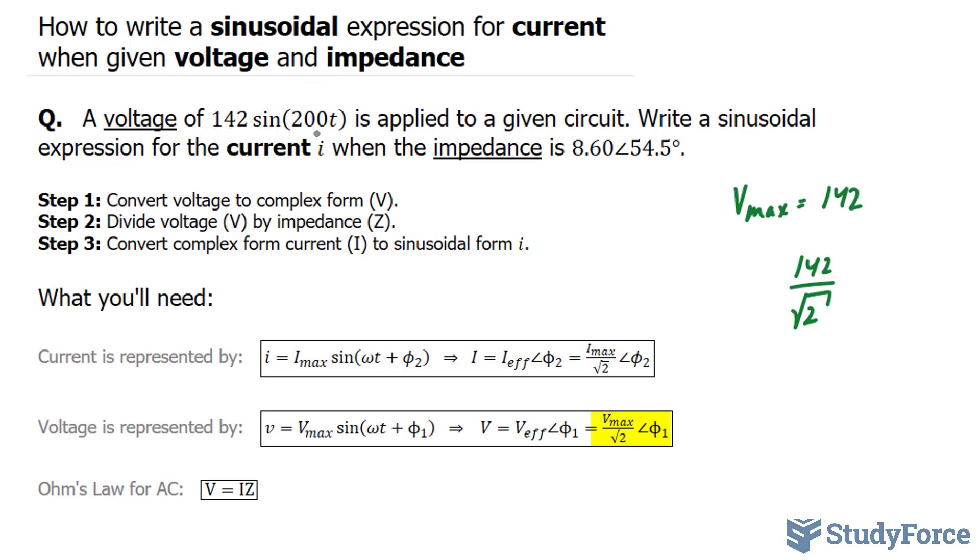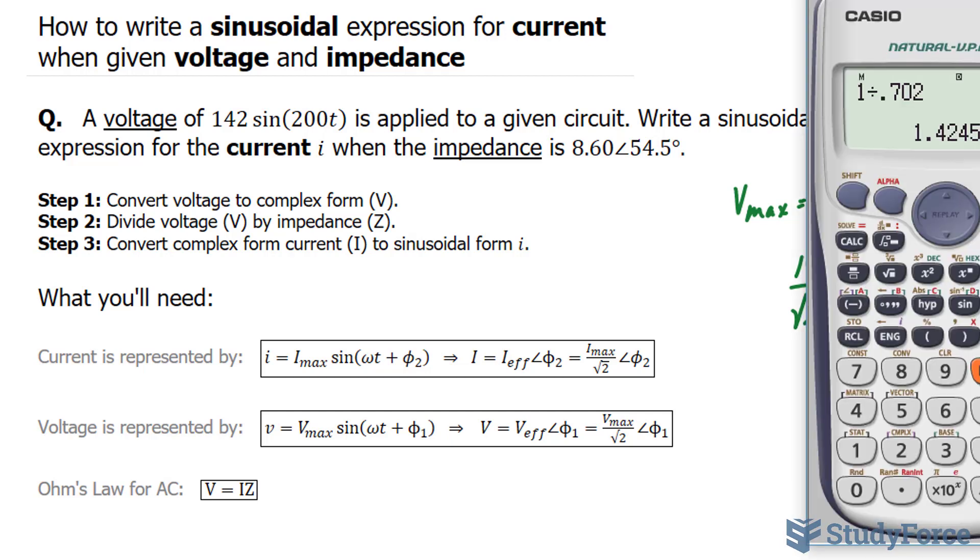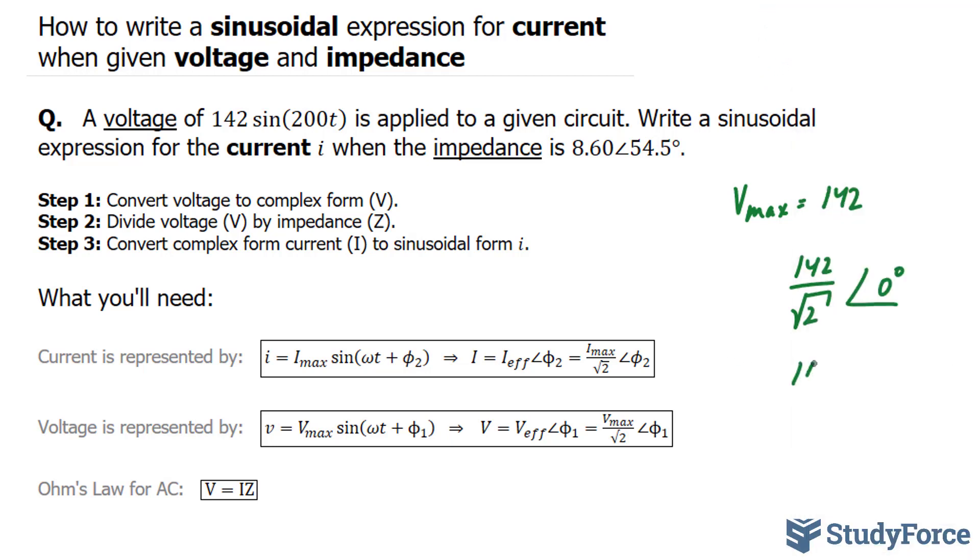According to our sinusoidal function, we don't have a phase angle, so our phase angle is 0°. 142 divided by the square root of 2 gives us approximately 100. So 100 ∠0° represents our equation in complex form.